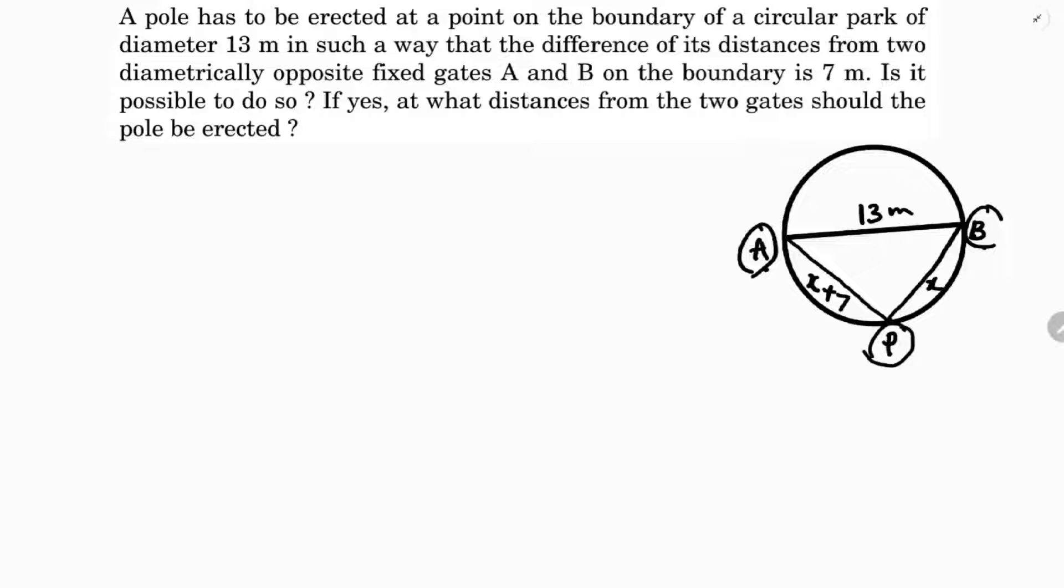Now here, angle APB is 90 degrees because angle in a semicircle is 90. So if I apply Pythagoras theorem, hypotenuse square equals sum of the squares of other two sides.